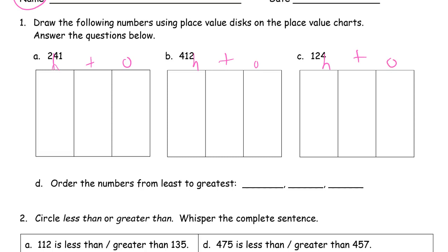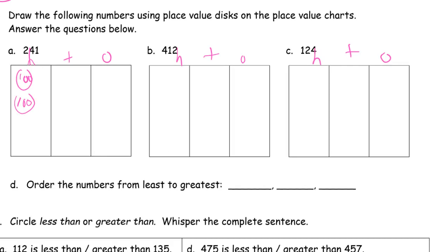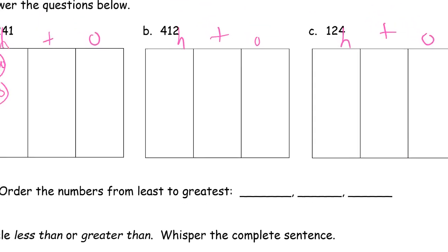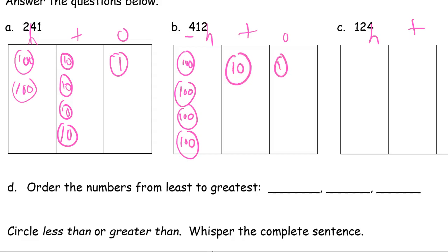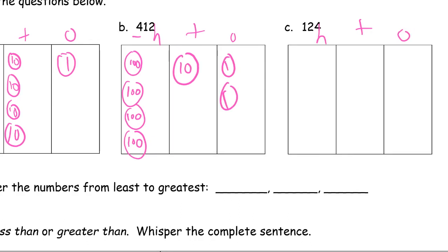For 241 we need two hundreds. Let me zoom in a little bit. Tens, we need four tens. And a single one. For 412 we need one, two, three, four hundreds. We need one ten. And we need two ones. For 124 we need one hundred, two tens, and four ones.